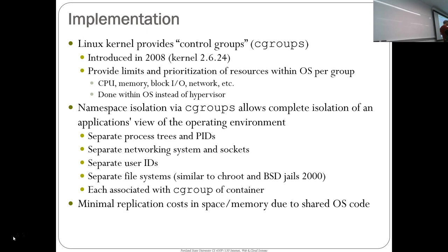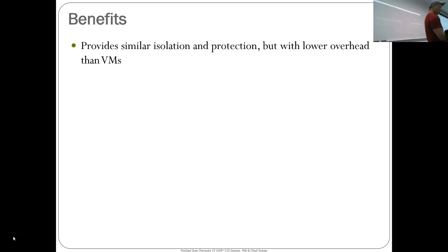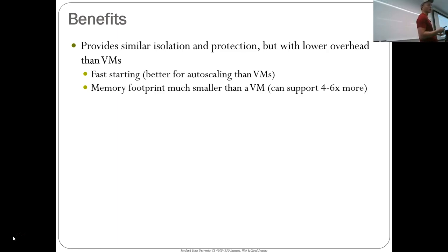The key takeaway: you're sharing the operating system code — I don't have to have multiple versions of the OS. It's just demultiplexed based on the container name. Some benefits: you get similar isolation and protection between virtual OSes, but with much less overhead than virtual machines. Containers are fast-starting — you can start a container very quickly because you're not booting an OS. It's more like running a binary than booting an OS. Startup times are measured in single-digit seconds.